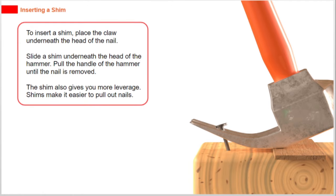To insert a shim, place the claw underneath the head of the nail. Slide a shim underneath the head of the hammer. Pull the handle of the hammer until the nail is removed. The shim also gives you more leverage. Shims make it easier to pull out nails.